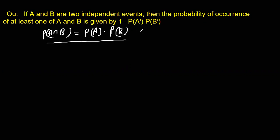This is given. Now they are talking about the probability of occurrence of at least one of them. That means they are asking us to prove that at least one of them means P(A∪B) would be equal to 1 minus P(A') P(B').